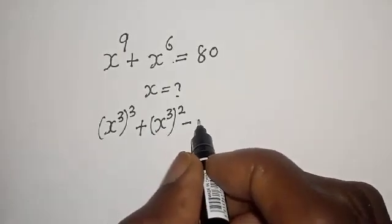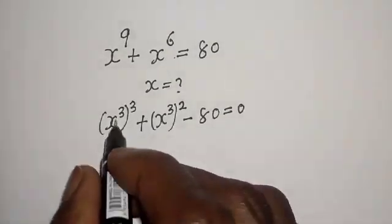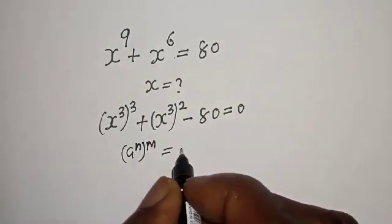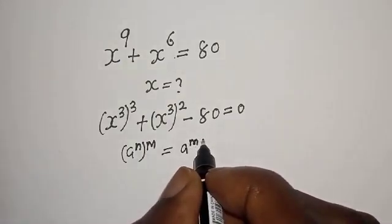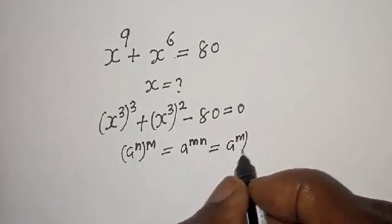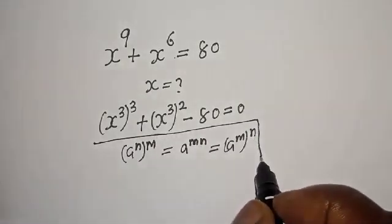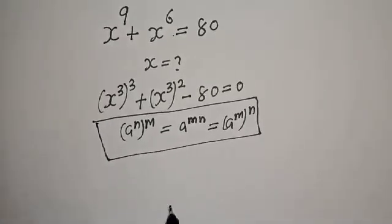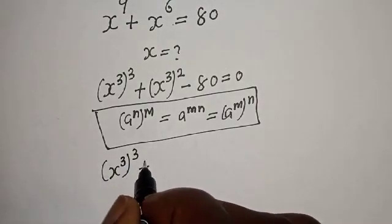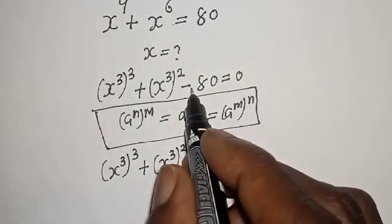Bringing 80 to this side it becomes minus 80, equal to zero. This follows from the rule: a raised to power n, to the power of m, is equal to a raised to power m times n, which is equal to a raised to power m to the power of n. So s raised to power 3, to the power of 3, plus s raised to power 3 squared, minus 80 equals zero.